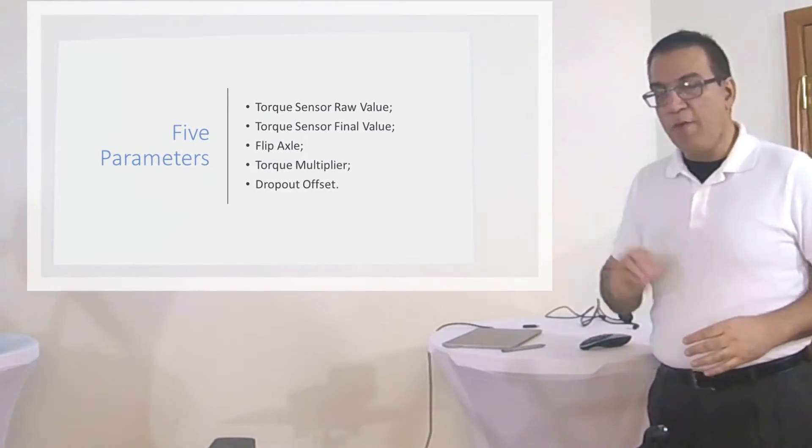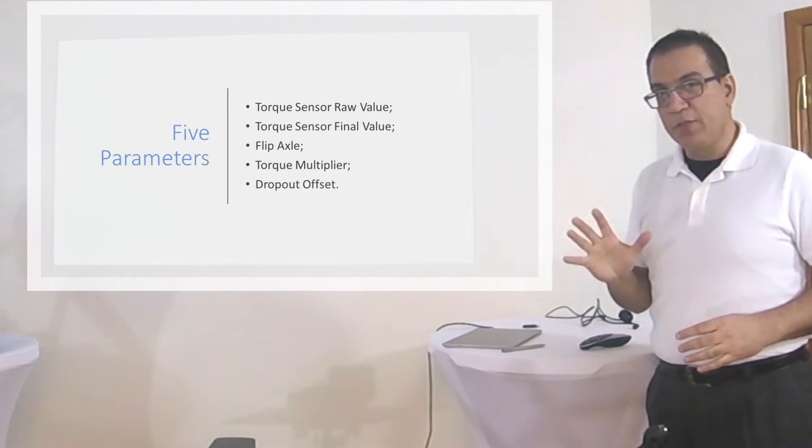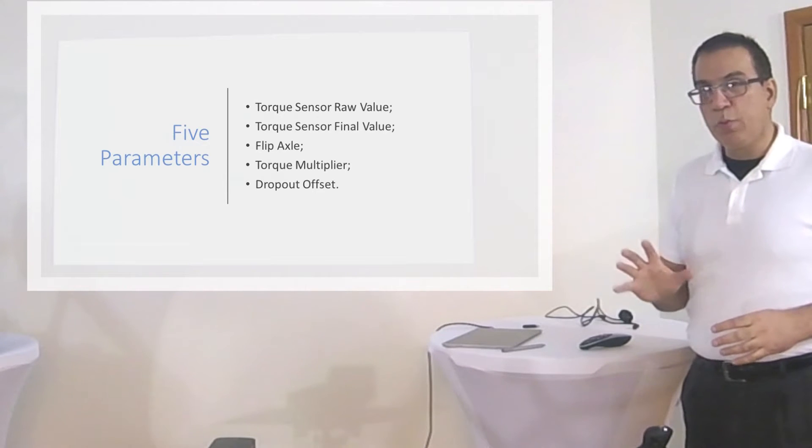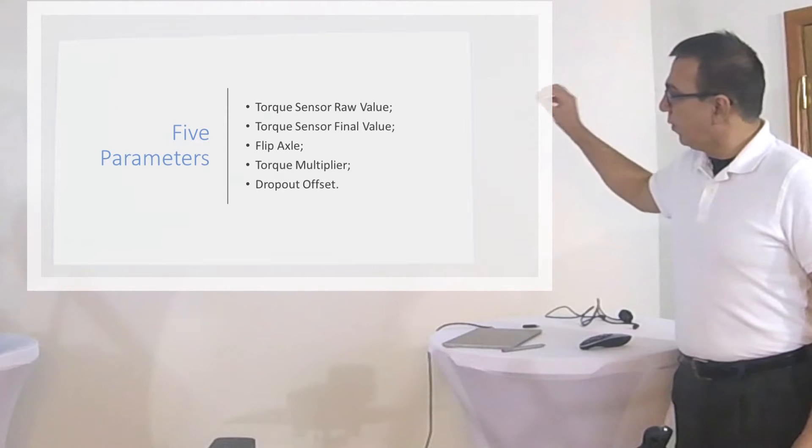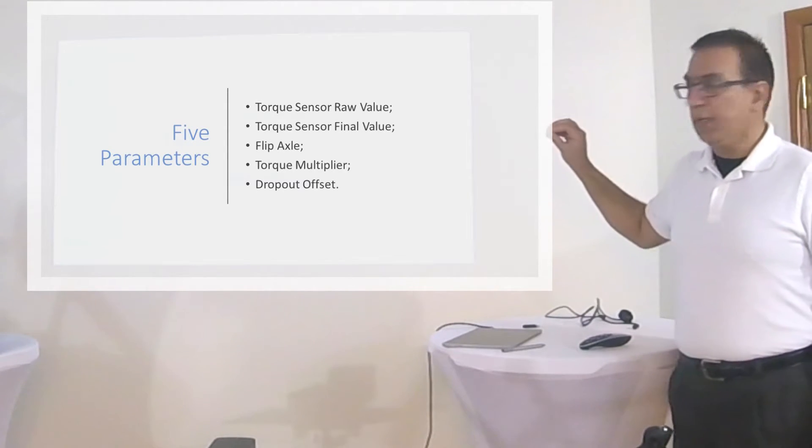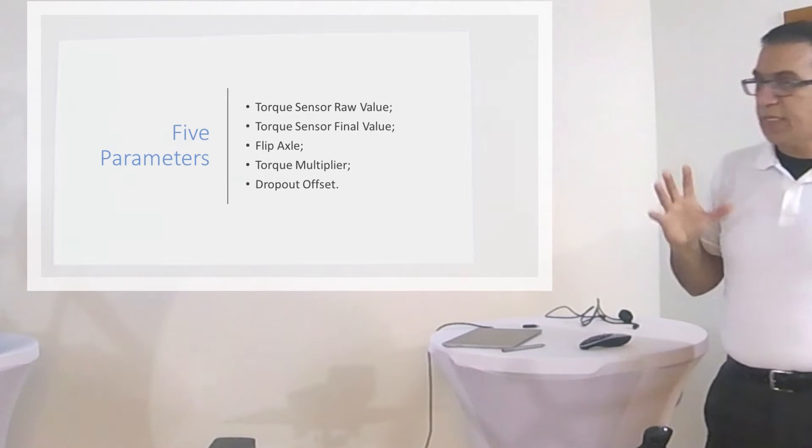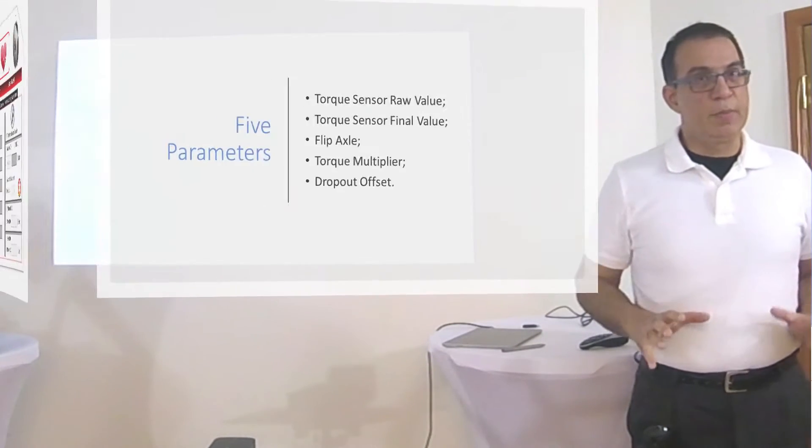In our software eBikeLab 1.5.7, there are five parameters which are important for calibration: torque sensor raw value, torque sensor final value, flip axle, torque multiplier, and dropout offset. These are the five parameters we want to focus on during the calibration process.